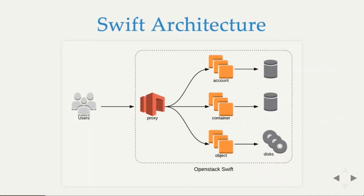The Swift architecture is highly modularized and it can scale to hundreds and thousands of nodes. It's basically made up of four different modules: the proxy module, or proxy servers, which is the public gateway to the RESTful API, and you also have the account servers, the container servers, and the object servers. All of this can make up thousands of nodes distributed in a cluster.